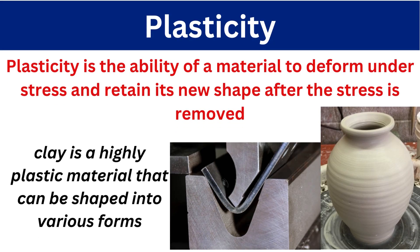Next is plasticity. In plasticity, after removing the force, the material will not regain its original shape. In elasticity we saw that once we release the force, it regains its original shape like rubber. But in plasticity, the material will deform and change shape and will not return to its original shape. Clay is a highly plastic material that can be shaped into various forms. Plasticity is very important for sheet metal components, because when force is applied, the material will not regain its original shape.